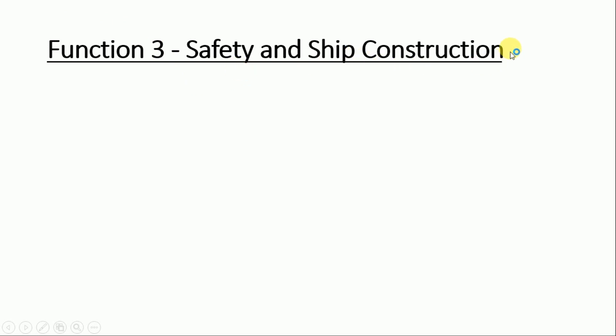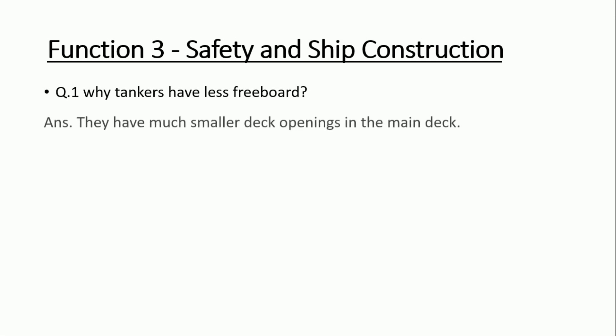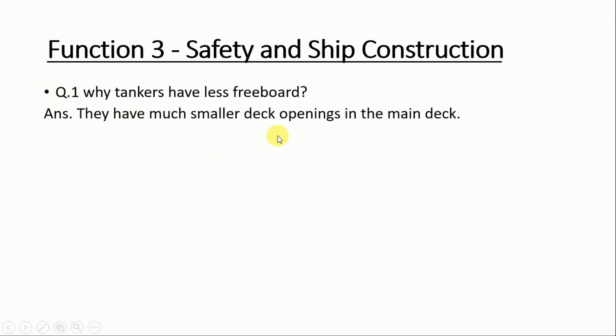Today I will be discussing Function 3, which is safety and ship construction. The first question is: why do tankers have less freeboard in comparison with container ships, ro-ro vessels, or any other type of ship? Do not try to directly jump to the conclusion. In every question, we have systematic points and we must describe all of them — you cannot give the answer in a single line.